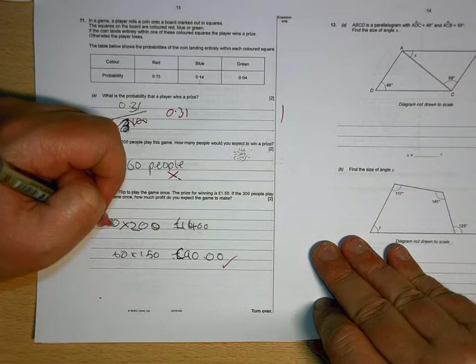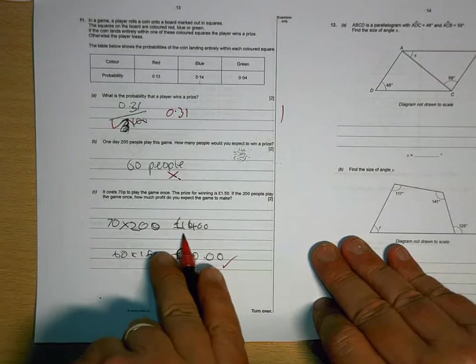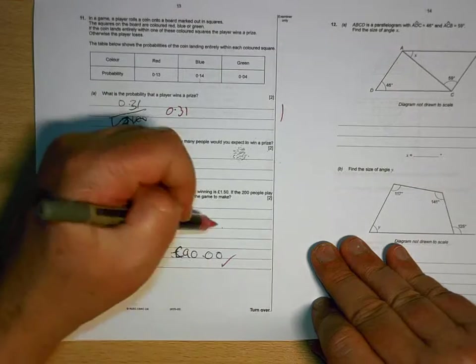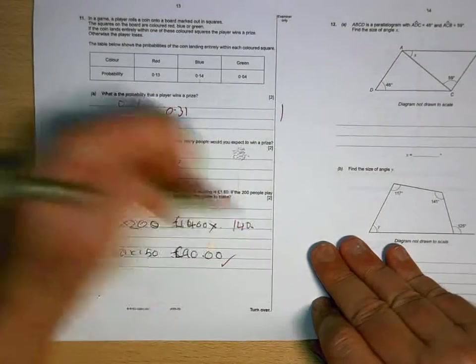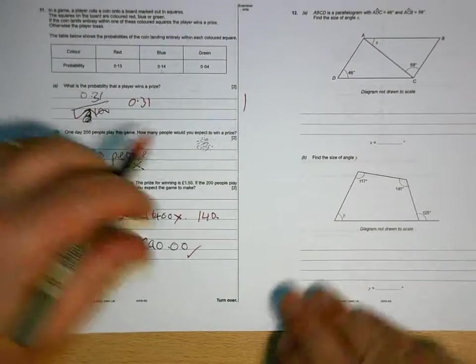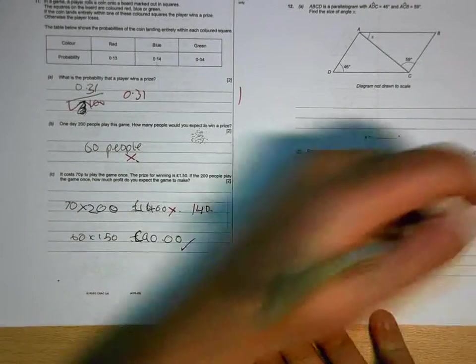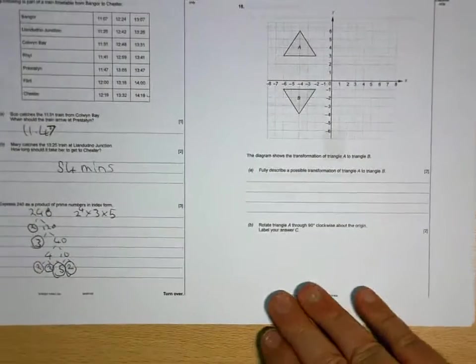60 lots of 150 is 90. 70 lots of 200 equals 1,400 pound is not right. It's 140. So you made a couple of mistakes there. 1 for that page.